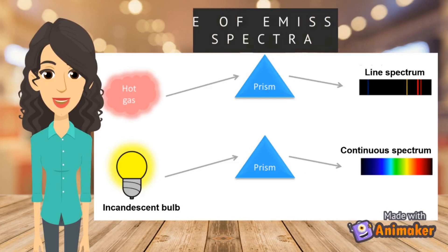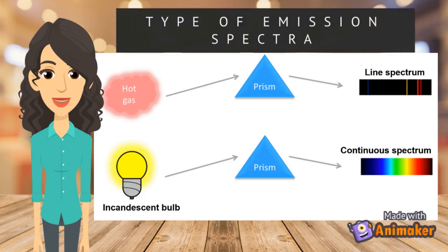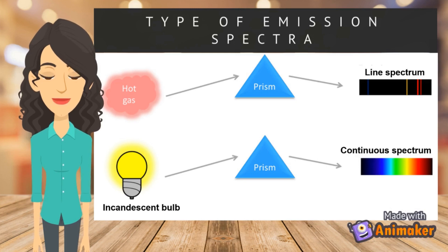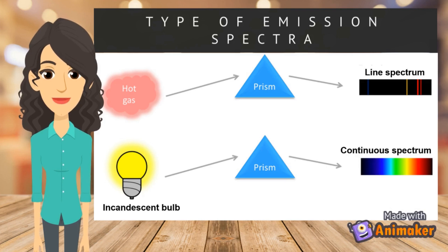Later on, chemists and physicists have studied the characteristics of emission spectra, which consists of continuous spectrum and line spectrum. Now, let us study how the continuous spectrum and line spectrum are formed.